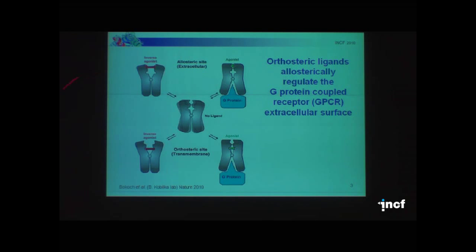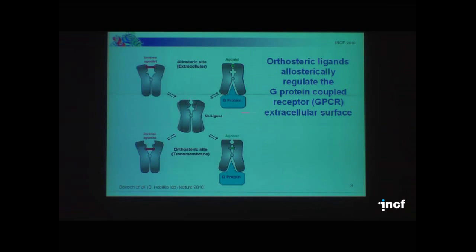Unfortunately one thing is missing from this scheme, because it was found that activation of the receptor can also be passed toward beta-arrestin. So there is another way of passing the signal. In some cases, substances that are inverse agonists for passing the signal via G-protein are agonists for beta-arrestin. So the situation is really complicated.